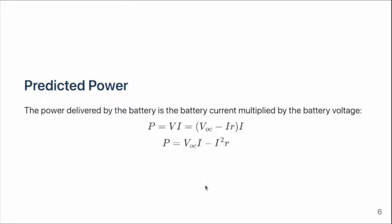The power delivered by the battery is the battery current multiplied by the battery terminal voltage. The current squared term shows us that this is the equation of a parabola and that the power has a maximum value. Note also that an increase in the internal resistance reduces the power.